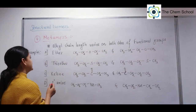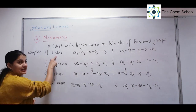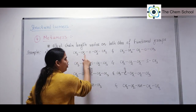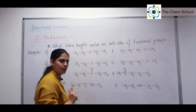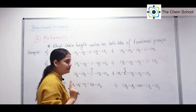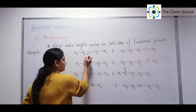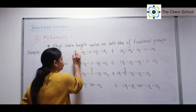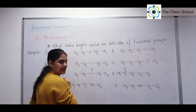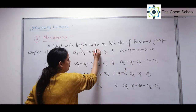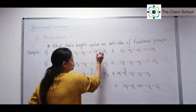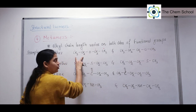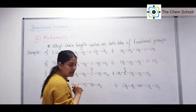The first example is ether. If we have two carbon-oxygen, we will say ether. On this side, one and two carbons are present, and on this side, one and two carbons are present — so two carbons on each side.